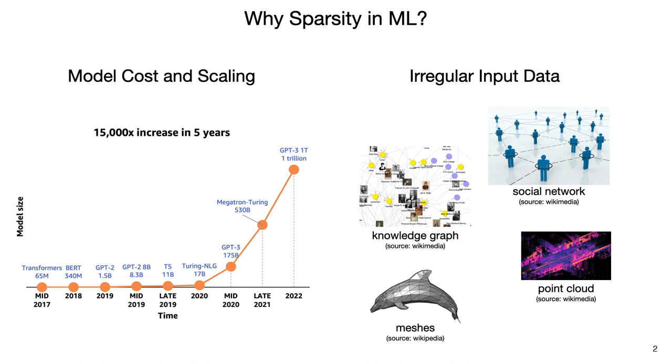The second reason is that we want to do both training and inference on regular and sparse data — things like knowledge graphs, social networks, meshes and point clouds. These are all data we have in our databases and we want to answer questions about them and provide predictions based on that data. Let me talk a little bit about model sparsity and give you three examples of where sparsity shows up in machine learning models.